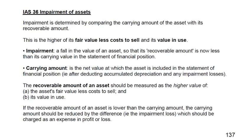In the revaluation or fair value model, we keep the asset at market value. Whenever this market value increases, we revalue the asset — the entry is debit non-current asset and credit revaluation reserve. Whenever there is a decrease in value, we make the reverse entry: credit the asset and debit the revaluation reserve.